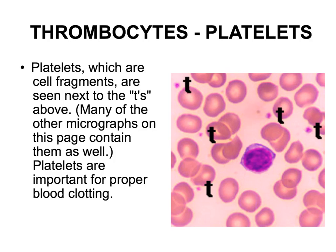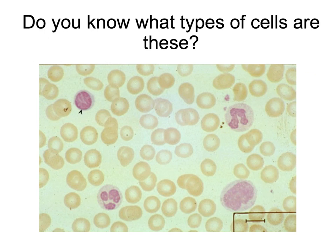We have now reviewed the erythrocytes and leukocytes. The third structure to identify is the thrombocytes, or platelets. These are cell fragments, indicated by the little tiny dots on the slide — the T's on the slide show you where those dots are. Platelets are important for blood clotting. This slide and the next are two opportunities for you to pause, identify the cells, and then continue to check your answers.